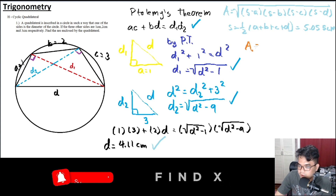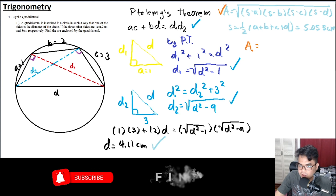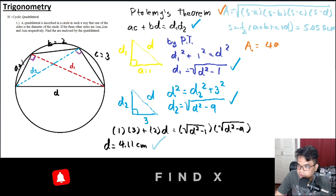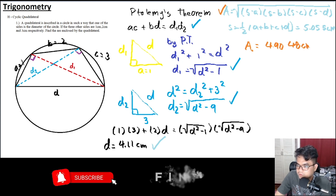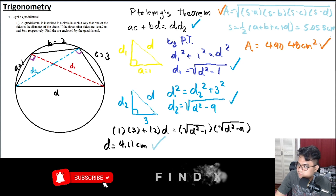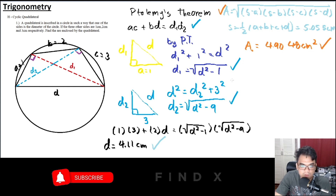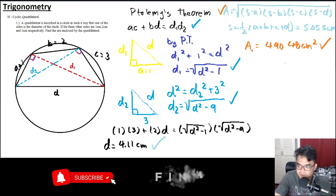Substituting all values into the formula, the final answer is Area = 4.9048 square centimeters.